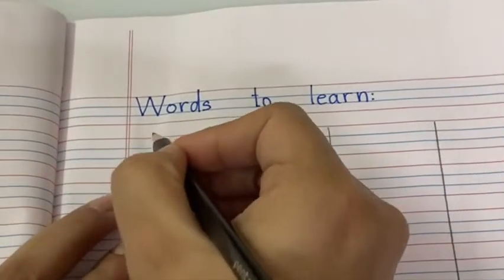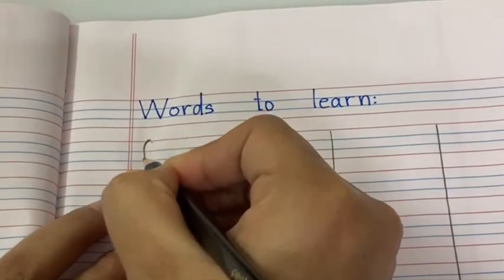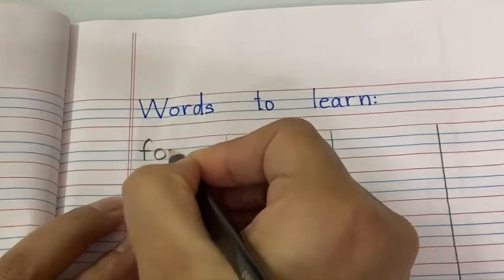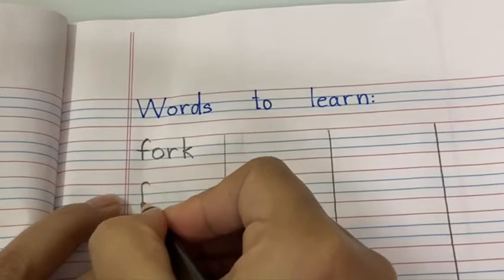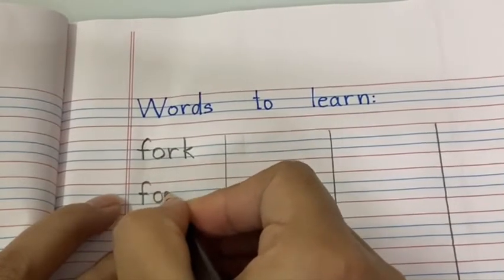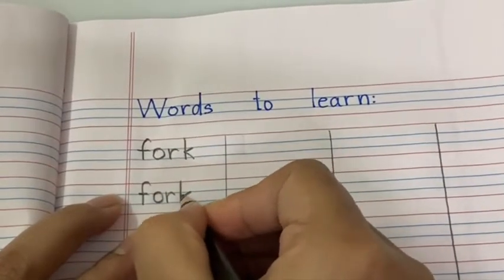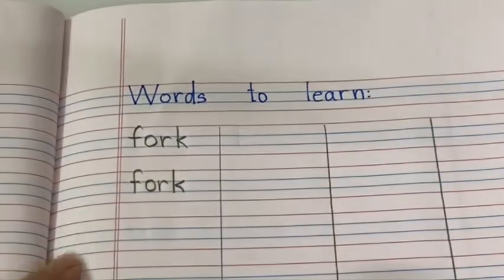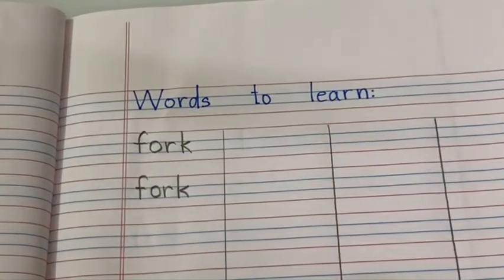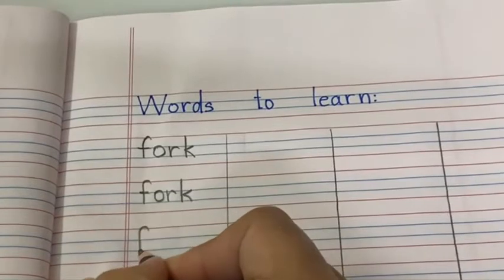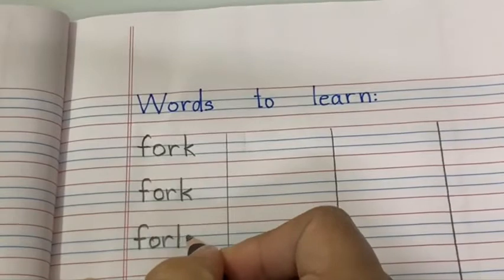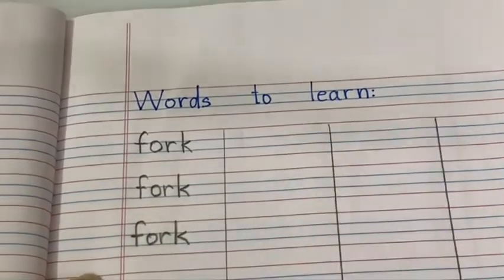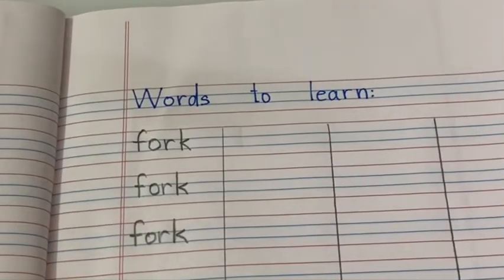First one is fork. Fork. F-O-R-K. F says F, O, R-R, K says K. Fork. F-O-R-K. Fork.